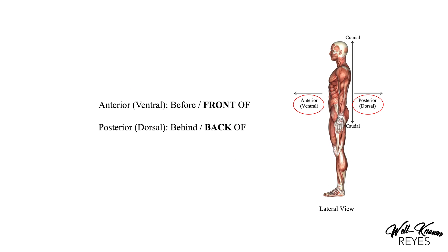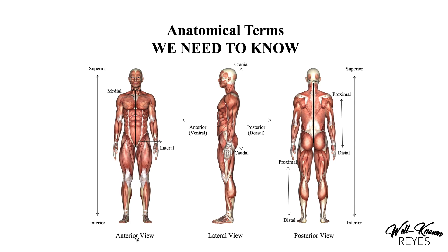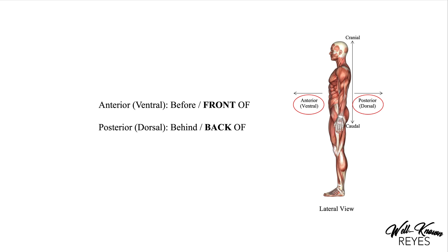The first terms we're going to cover are anterior and posterior. Another word for anterior is ventral, and another word for posterior is dorsal. Anterior just means in front of, before. Posterior means back, behind. Going back to that first original slide, notice that down here it says anterior view — that is the front of the body. And right here it says posterior view — that is the back of the body.